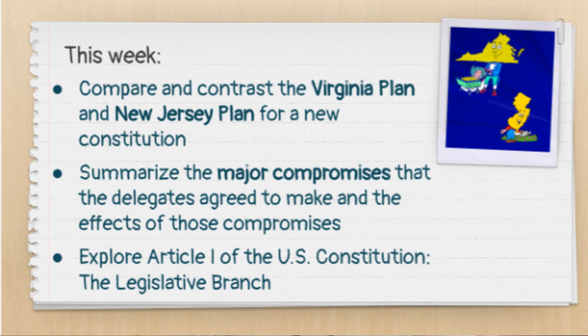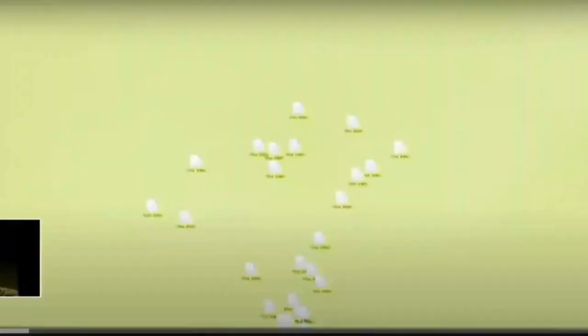We're going to do this by comparing and contrasting the Virginia Plan and New Jersey Plan, summarizing the major compromises that the delegates agreed to make and the effects of those compromises, and exploring Article 1 of the U.S. Constitution — the legislative branch.